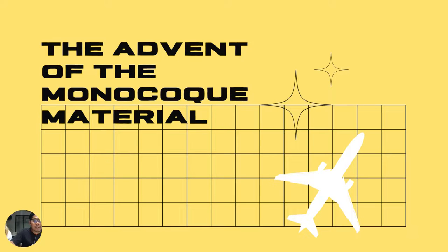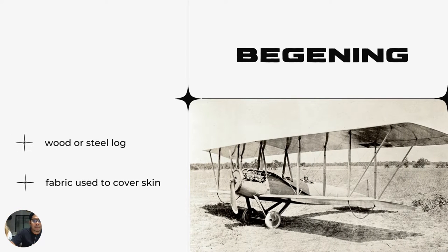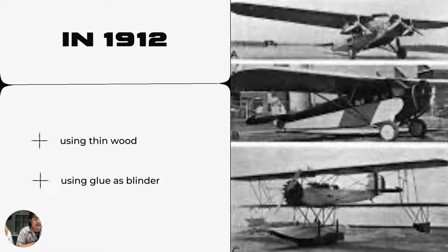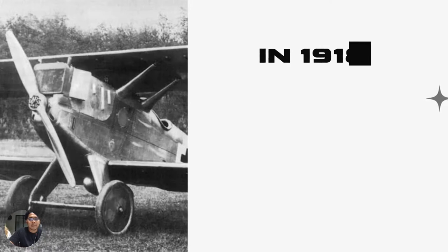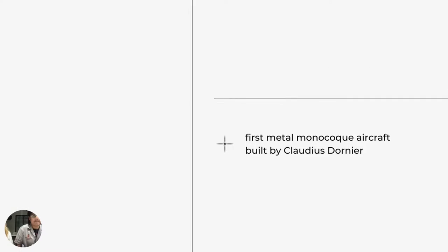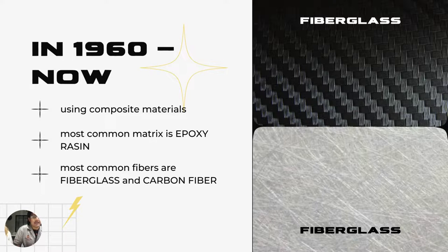The advent of the monocoque material: in the beginning, aircraft were built using wood or steel tube as a structure, and fabric was used to cover the skin. In 1912, aircraft were built using thin wood to make a 3D structure with glue as a binder. In 1918, the first all-metal monocoque aircraft was built by Claudius Dornier. From 1960 until now, aircraft have been built using composite materials.